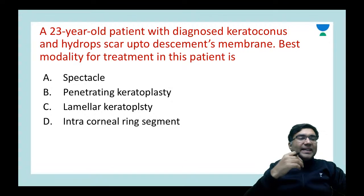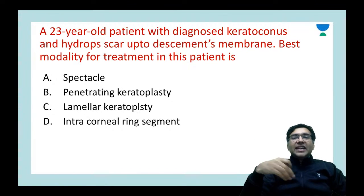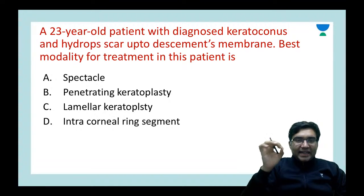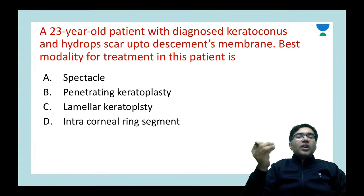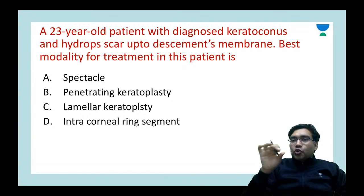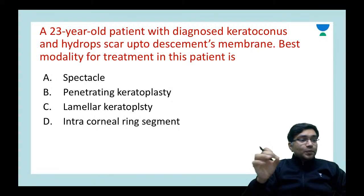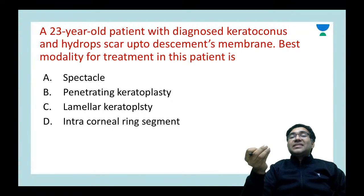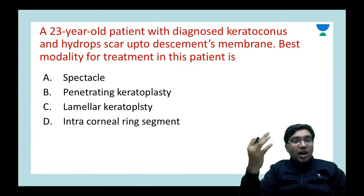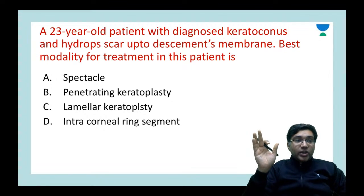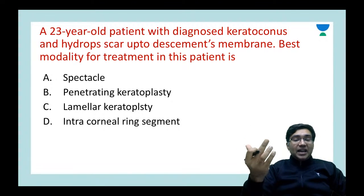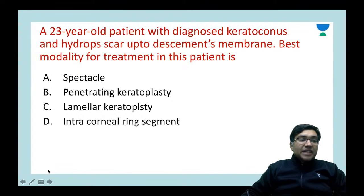A 23-year-old patient with diagnosed keratoconus and hydrops scar up to Descemet's membrane is seen. Options for treatment: spectacle, penetrating keratoplasty, lamellar keratoplasty, or intracorneal ring segment. In hydrops, aqueous humor percolates up to the stroma and causes a scar going all the way up to Descemet's membrane — this is a deep scar. These patients require penetrating keratoplasty.